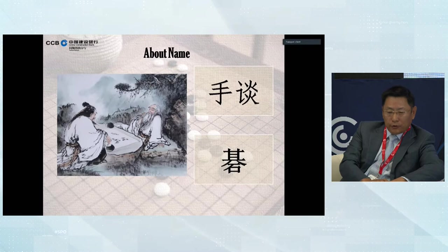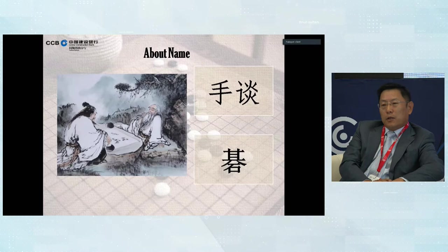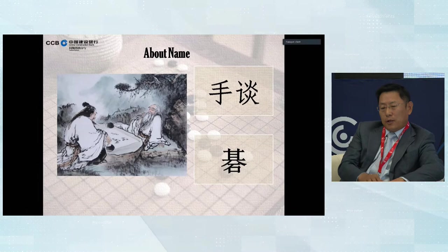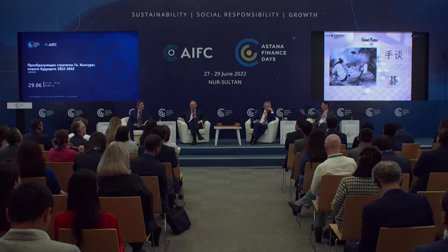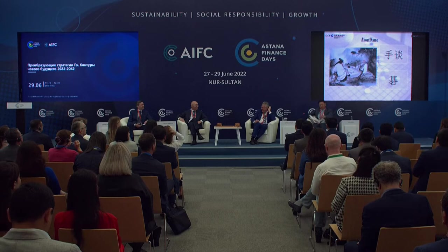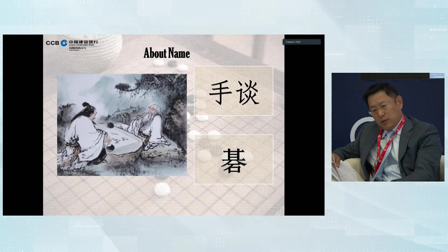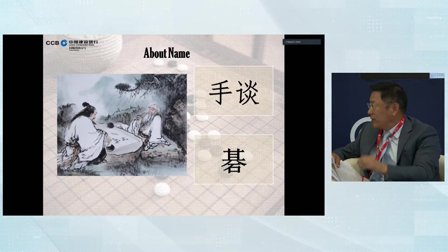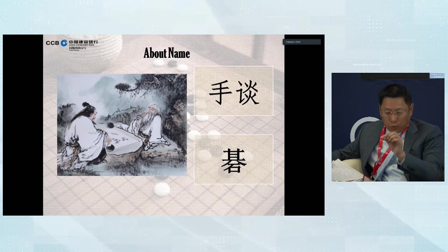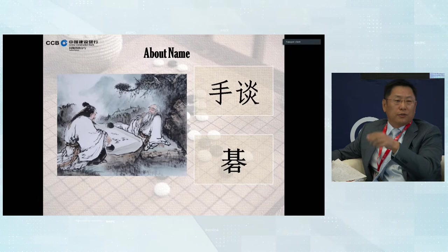The name 'Go' is a foreign name. The ancient Chinese name is 'Shou Tan.' The first character, Shou, means 'hand.' The second means 'talking.' So in ancient China, they played games using hands to talk, not mouths. The second character, Qi, has two parts combined — the upper part means chess, and the lower part, the stone, means chessboard. For the rules: two players play with 361 black and white pieces, and the one who obtains the most area of the board wins.